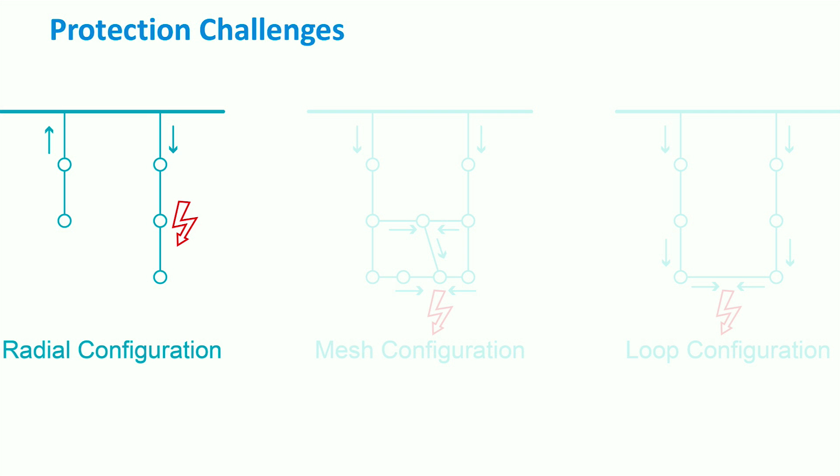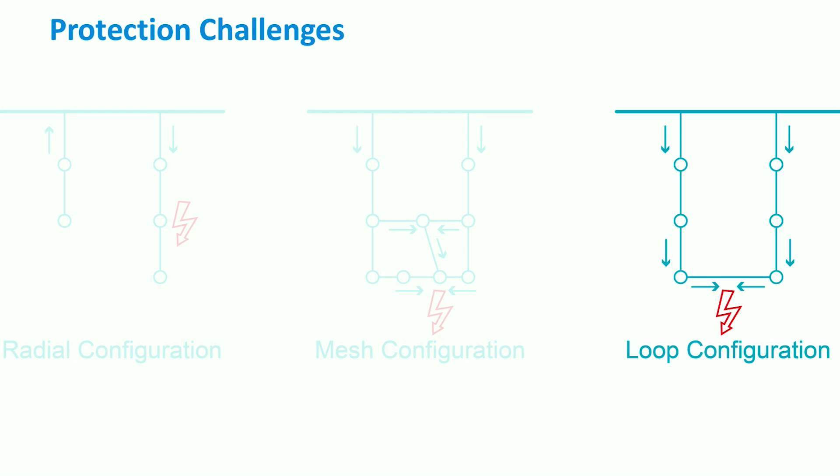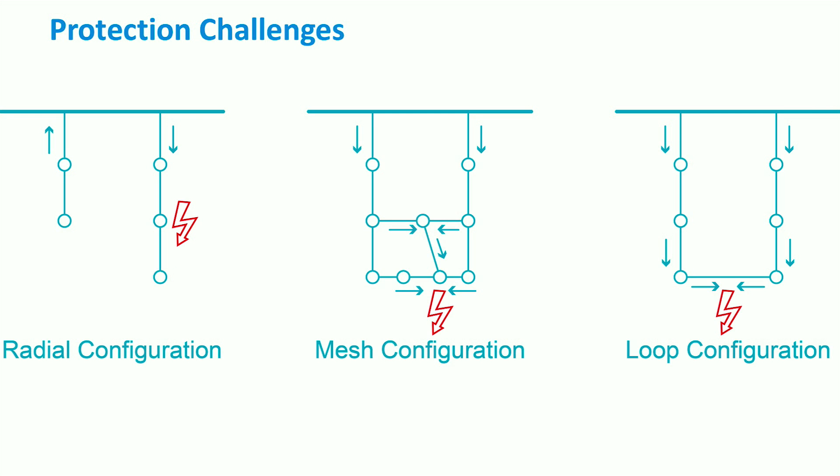The implementation of the protection scheme is particularly challenging in meshed or loop configurations, due to the fact that current direction can easily change depending on the location of the fault.